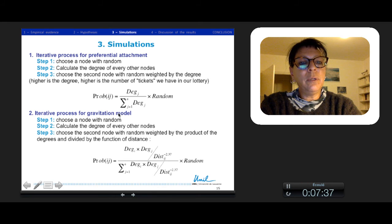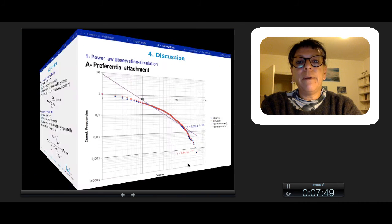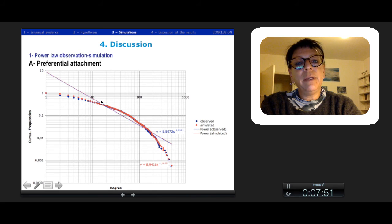For the gravitation model, we used a probability which takes into account the gravitation model with a random effect. We compare the observed distribution in blue in 2004 and the simulated distribution from 2000 to 2004, stopping when we reach the total degree. We compare the slopes of the power law, which is very close to the observed one.